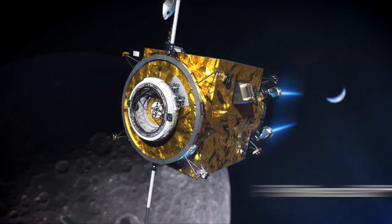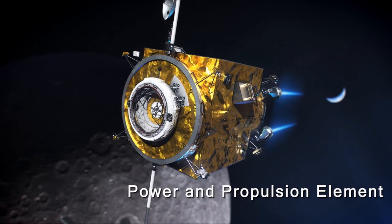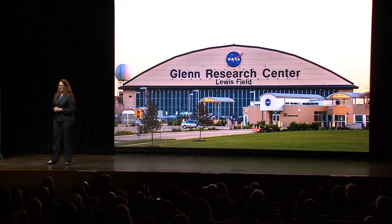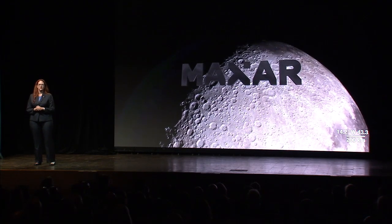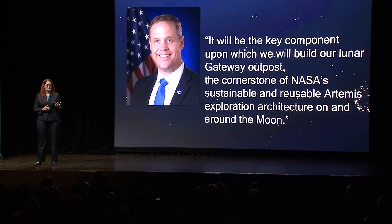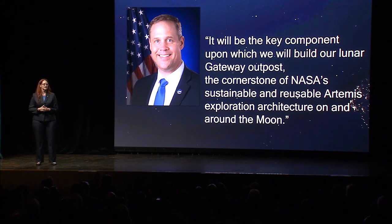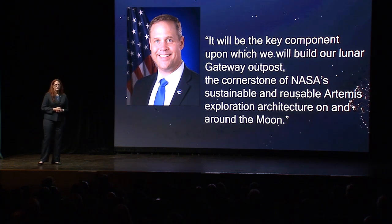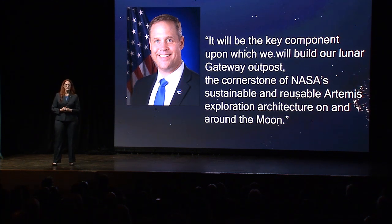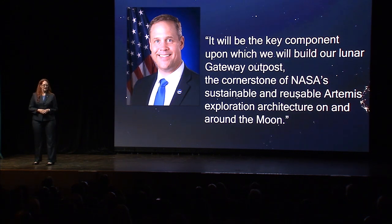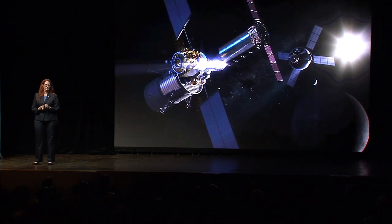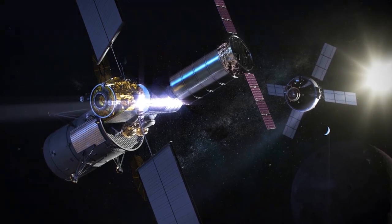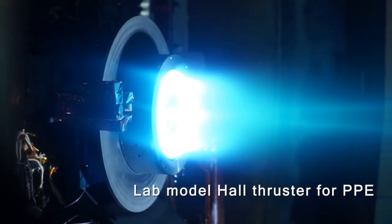The Gateway is a mobile command and service module. It will provide us with a place to aggregate and assemble the spacecraft that will land on the Moon, as well as provide a communications relay to support robotic and human missions anywhere on the Moon's surface, starting at the Moon's south pole. The first element of the Gateway is the Power and Propulsion Element, managed here in Cleveland at NASA Glenn Research Center and built in a public-private partnership with Maxar Technologies.